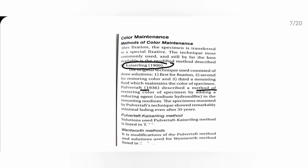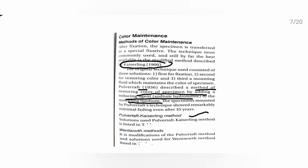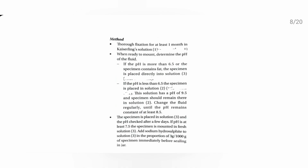This is a method for restoring the color of the specimen by adding the reducing agent sodium hydrosulphite to the mounting media. This method is the Kaiserling method. One more method is the Wentworth method, which is a modification. To maintain color, you can use the Kaiserling method with sodium hydrosulphite added, or the Wentworth method. These two methods can be used.